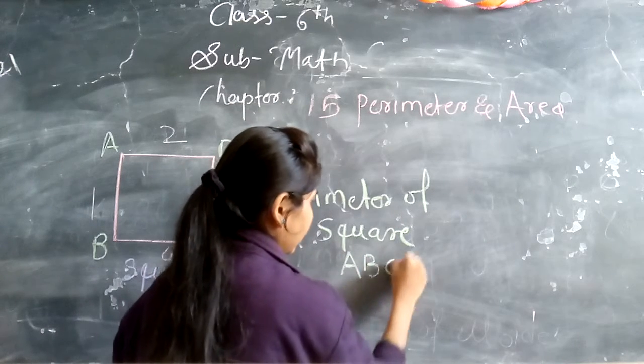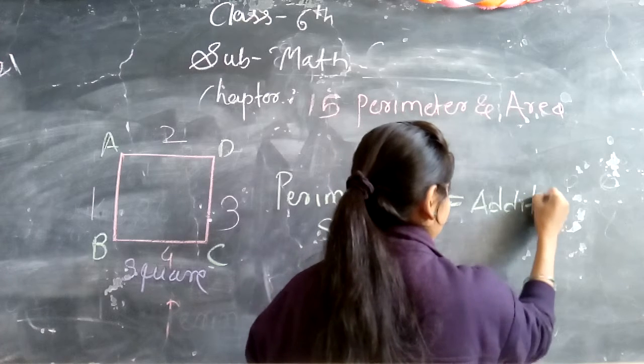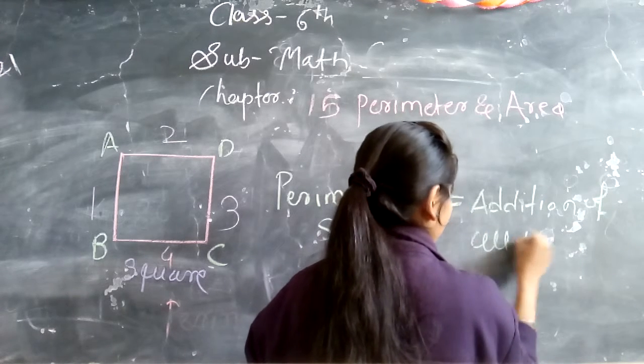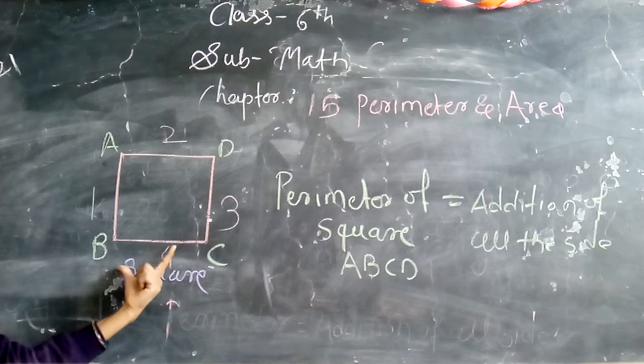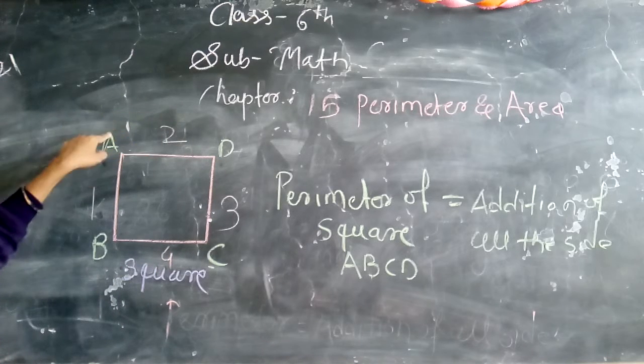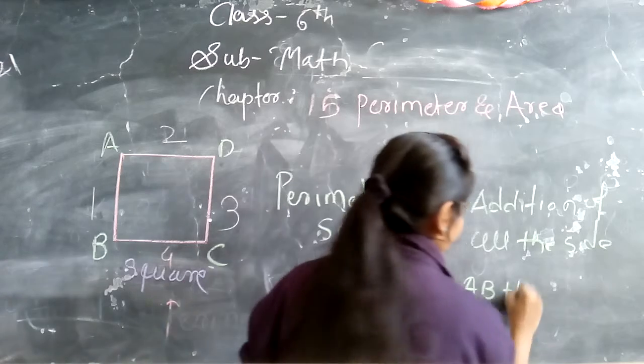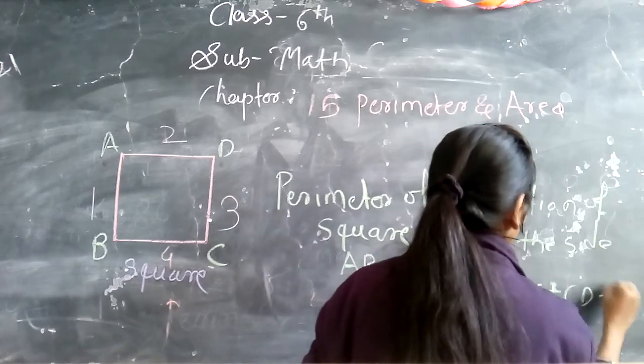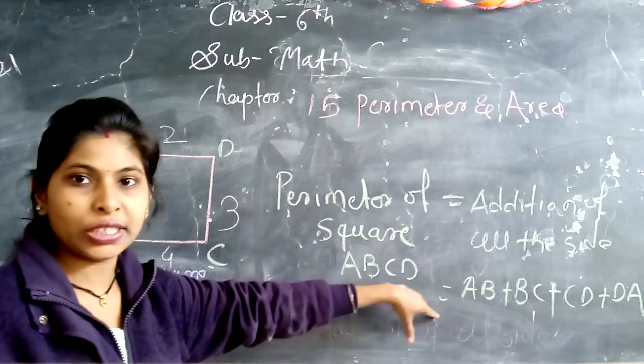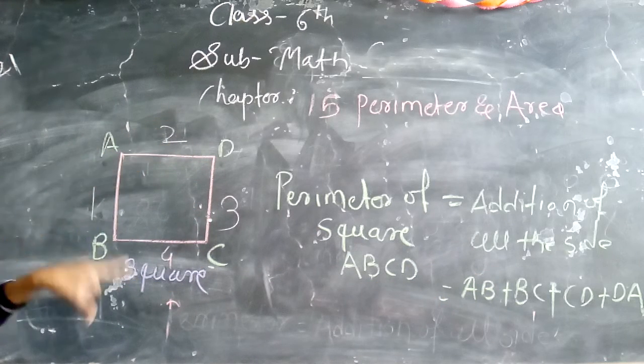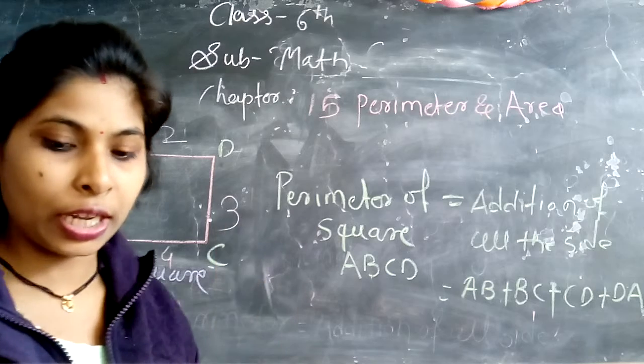So perimeter of square ABCD is equal to the addition of all the sides. The sides of the square are AB plus BC plus CD plus DA. So this is the perimeter of square, the addition of all the sides.